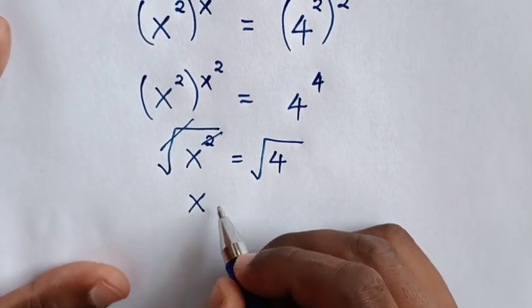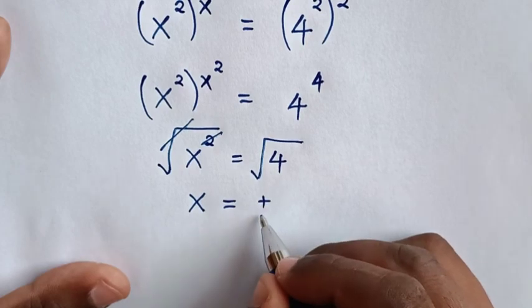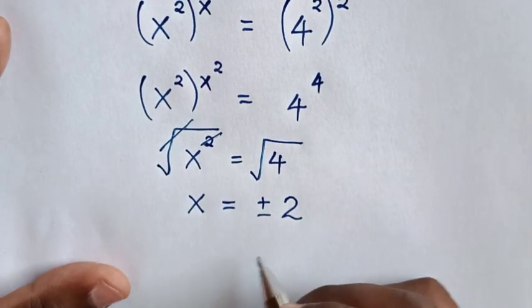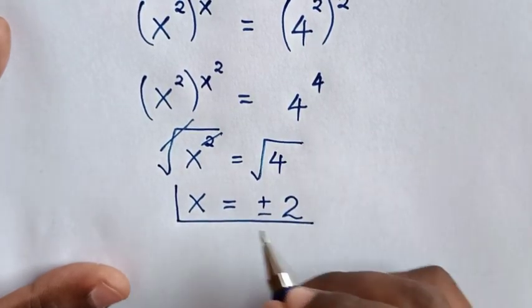Then x is equal to square root of 4 is plus or minus 2, so this is the final answer for the value of x.